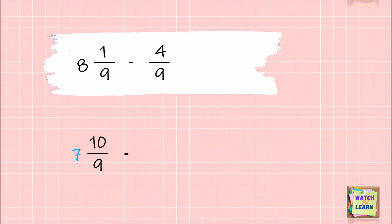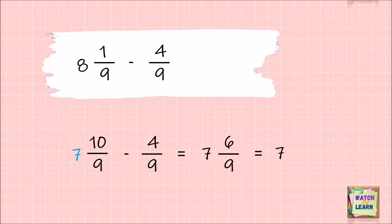Now we can continue and start solving: seven takeaway nothing is seven, and 10/9 - 4/9 is 6/9. Remember to always simplify your answer to its lowest term. Therefore, the final answer is 7 and 2/3.